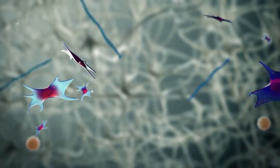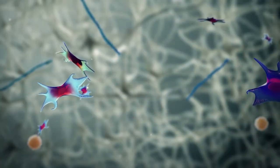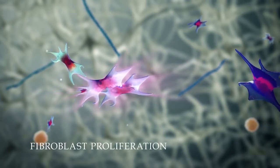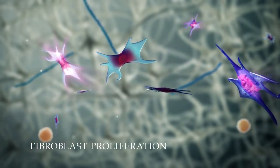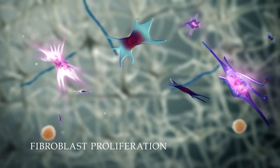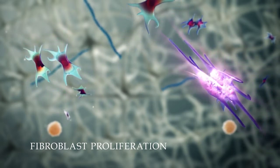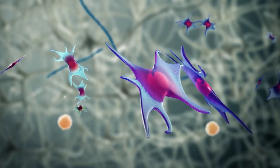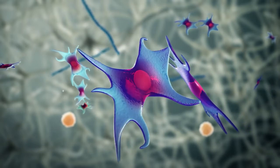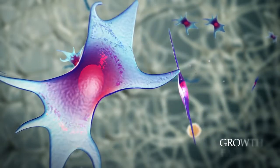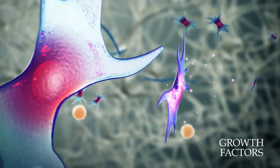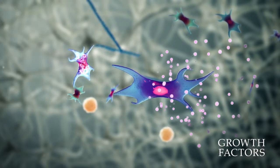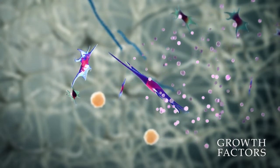As the inflammatory process goes on, fibroblasts move toward the wound site guided by, among others, hyaluronan fragments. These fragments stimulate fibroblast mitosis. In the late inflammatory phase, the epidermal barrier needs to be rebuilt. Fibroblasts release growth factors that are able to support keratinocyte proliferation.